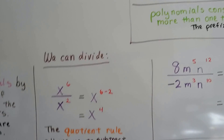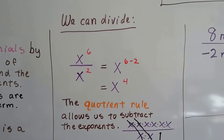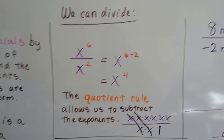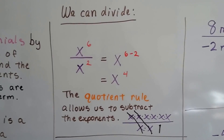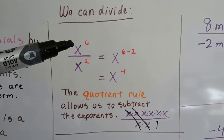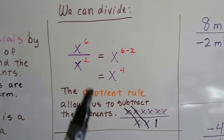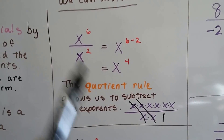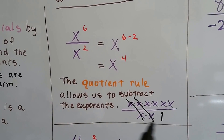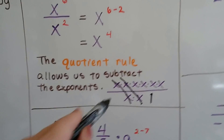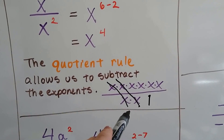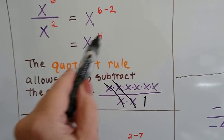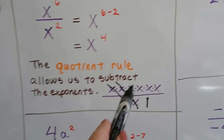So we can divide x to the sixth power by x to the second power. We use the quotient rule, which allows us to subtract the exponents — six minus two — and we get x to the fourth power. What's happening is there are six x's in the numerator and two in the denominator. We cancel two pairs, and that leaves four x's left — x to the fourth power, x multiplied by itself four times.